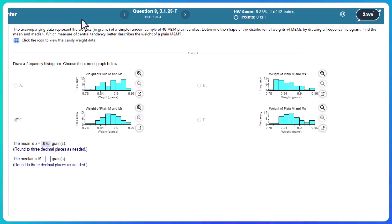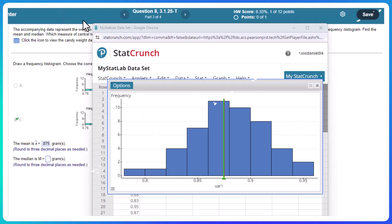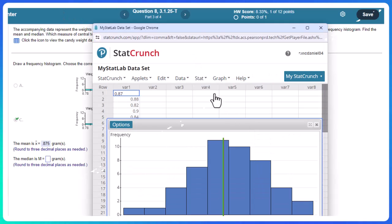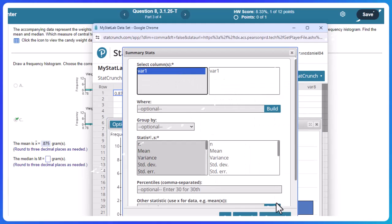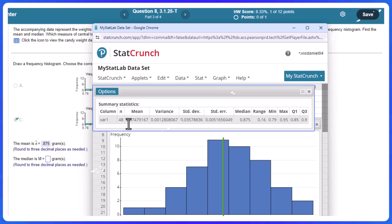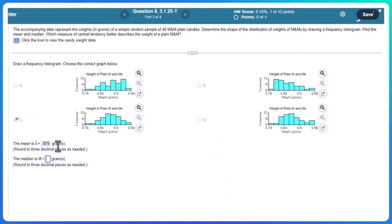So another way we could have gotten that is from using the summary statistics. And recall, I almost always do that before I do anything. Stat, summary statistics, columns. And here they are as well, same two values. So the median is also 0.875.